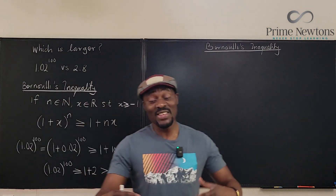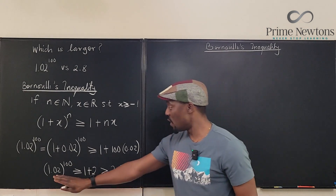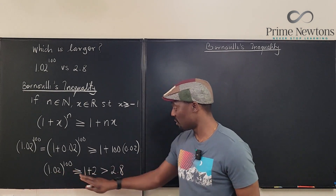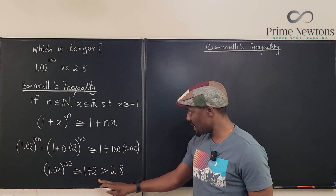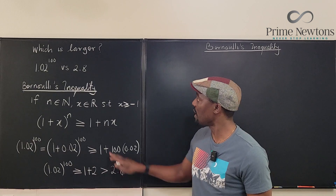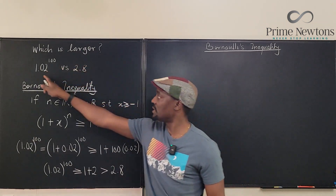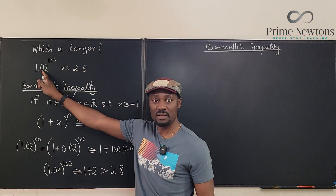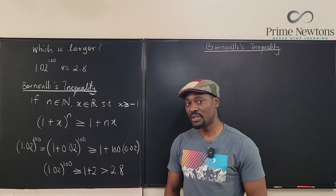So we know this number is greater than 3, and 3 is definitely greater than 2.8. Therefore, the bigger of the two numbers is 1.02 raised to the power 100.